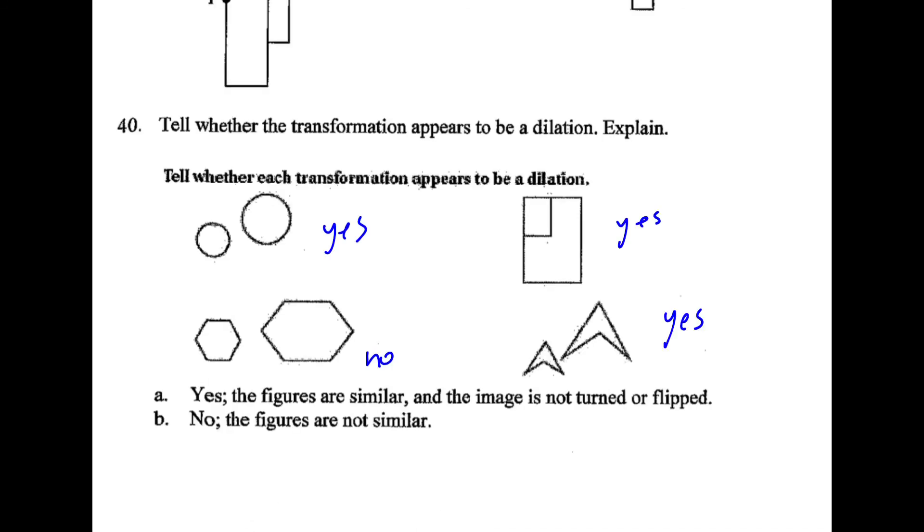And here for 40, dilations, they shouldn't stretch out more one way than the other. So because this is getting wider, that doesn't work. All three of the other ones do.